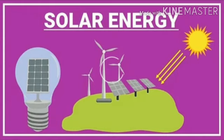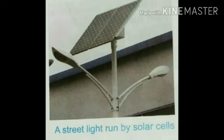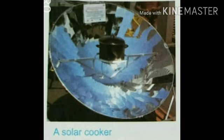The energy of the sun is never ending and will never be finished, and we can get this energy in plenty. Solar cells are special cells which trap sunlight and convert it into electricity. We can also make use of solar cookers and solar water heaters.